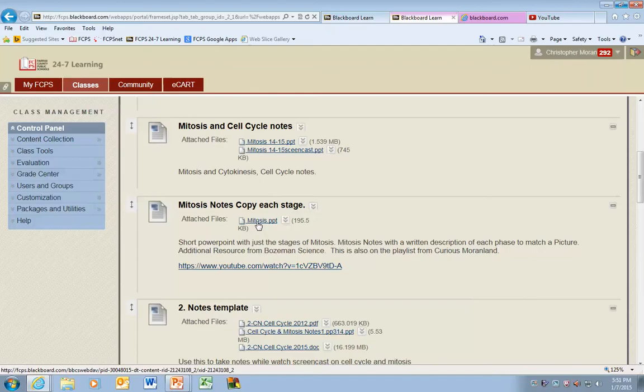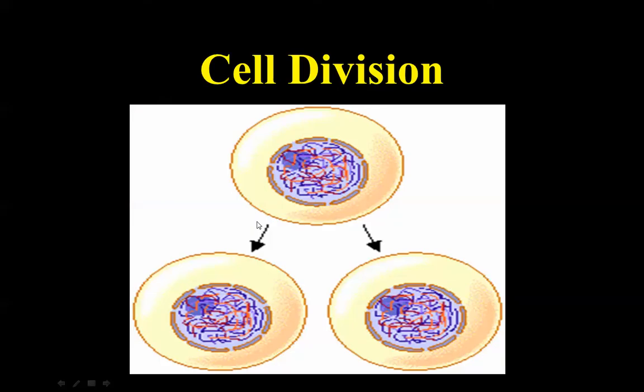I'm going to walk right through it. So when you click that, this is what you're going to get. Cell division — one cell divides into two. Each one of the slides is one slide per stage of mitosis, or one slide for interphase, which actually has three parts. So let's talk about interphase first.